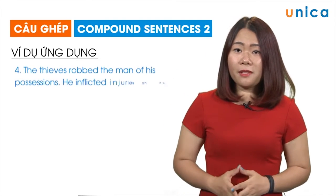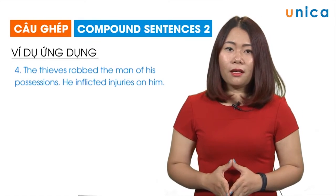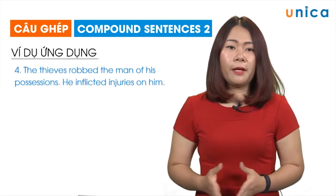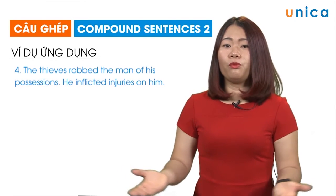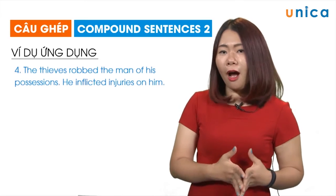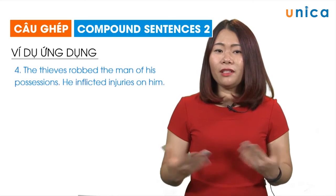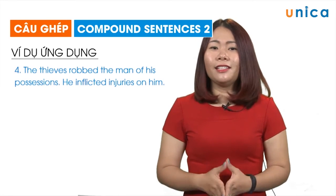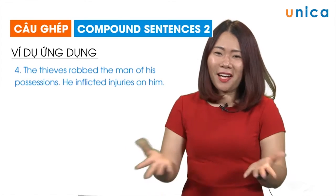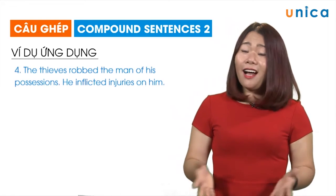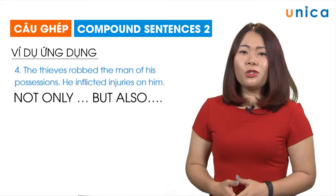Câu thứ tư: 'The thieves robbed the man of his possessions. He inflicted injuries on him.' Hai câu này chỉ sự việc là tên trộm đã cướp đi tài sản của người đàn ông và còn làm bị thương người đó. Vậy nên để nhấn mạnh mức độ nghiêm trọng của sự việc thứ hai, chúng ta sẽ sử dụng liên từ 'not only...but also' — không những thế này mà còn thế kia.